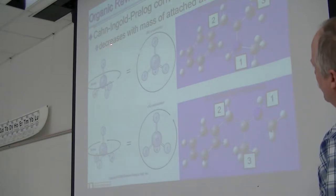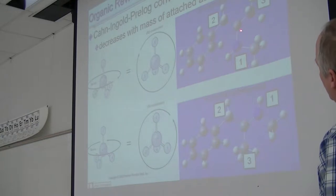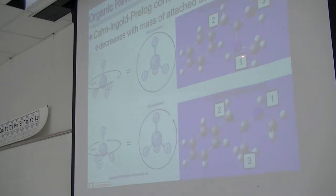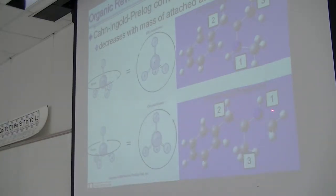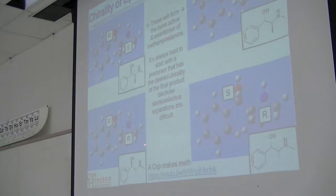The priority decreases with mass of the attached atom. This is the first priority - the heaviest is nitrogen. Then these two are carbons, so you break the tie by looking at mass added to them. This particular chiral center is R, clockwise. The same molecule put together differently gives you S methamphetamine. You can have RS, SS, RR, SR.